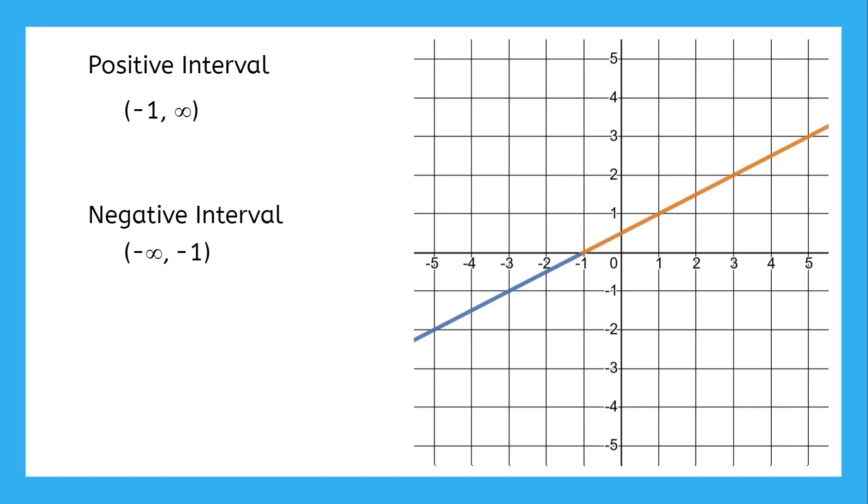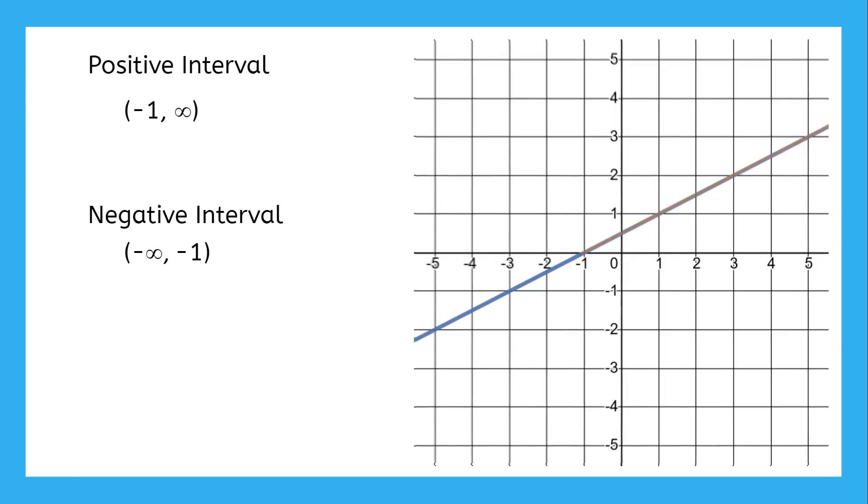Remember, zero isn't considered positive or negative, so any input that gives an output of zero is excluded for both intervals, which is why both intervals in this example use a parenthesis for negative one instead of a bracket.